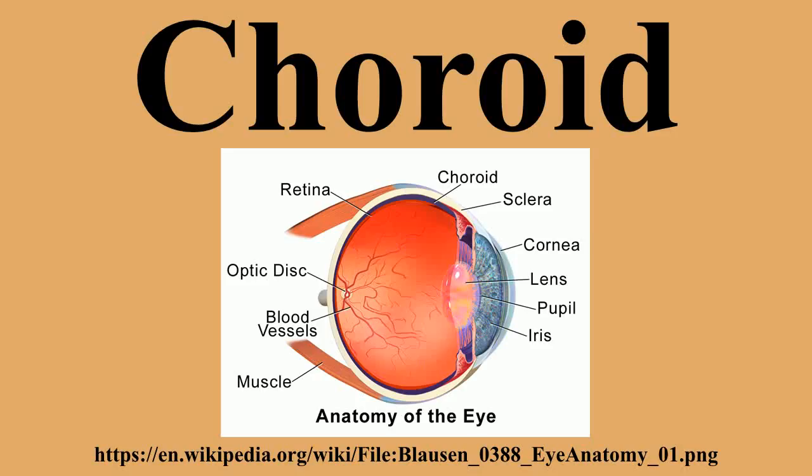In these animals, melanin is absent from a section of the choroid, and within that section a layer of highly reflective tissue, the tapetum lucidum, helps to collect light by reflecting it in a controlled manner. The uncontrolled reflection of light from a dark choroid produces the photographic red-eye effect in photos, whereas a controlled reflection of light from the tapetum lucidum produces eye shine.